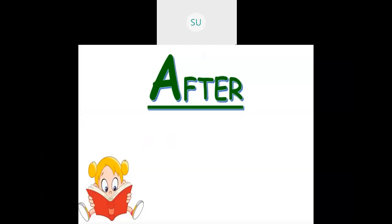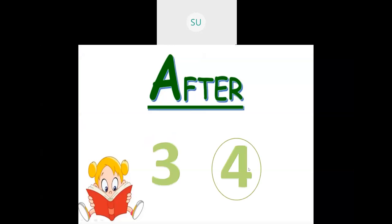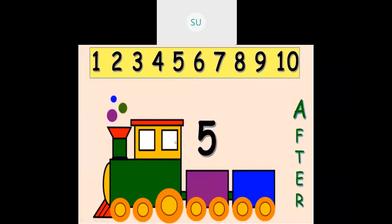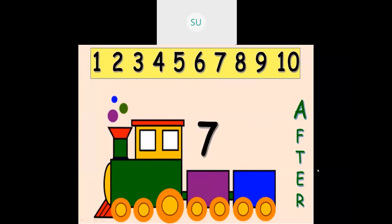Then after — what is the meaning of after? Here I have two numbers: 3 and 4. The number that comes later or second is called the number which is after. So 4 comes after 3. Let's guess after numbers. Here they have given 5 — what is the number after 5? After 5 we have 6. Then after 7 it is 8.